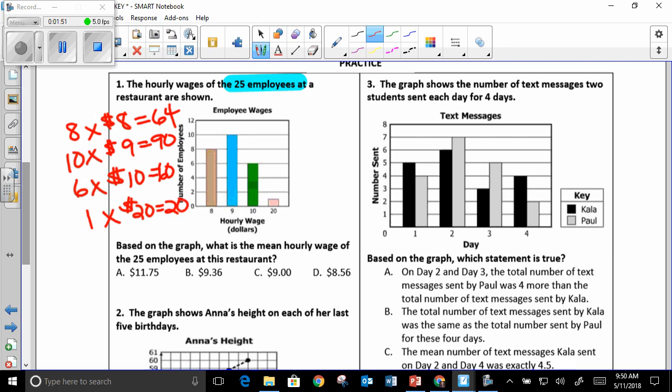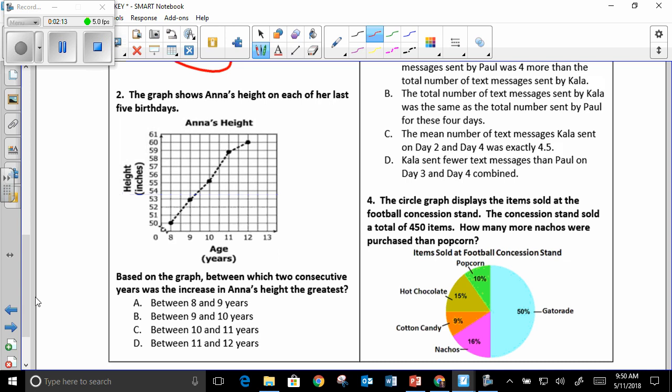So be careful because look and see how many people you're dealing with. Once you added that all up, you would have gotten 234. And then you need to divide that by 25 because 25 employees. So your answer is $9.36.